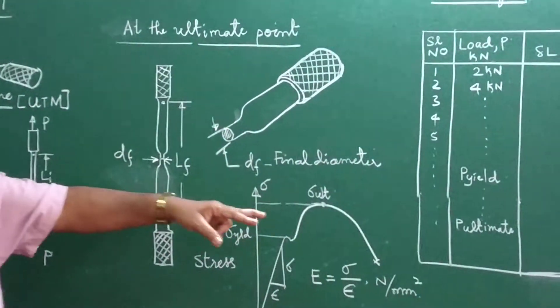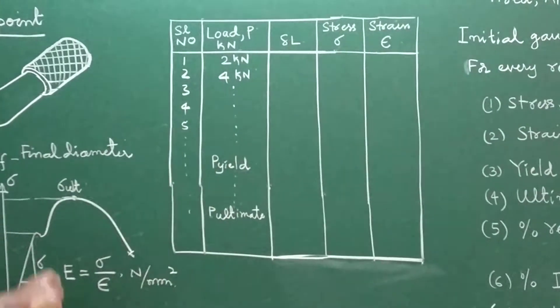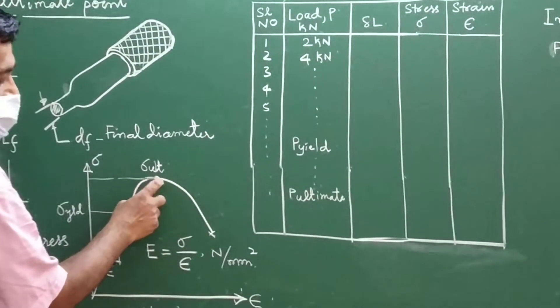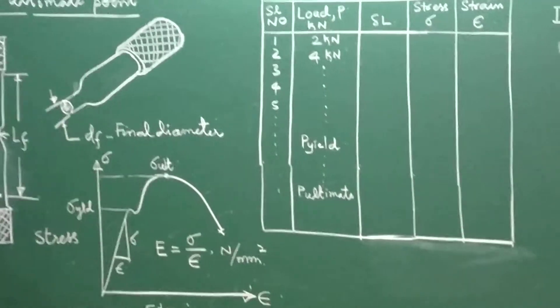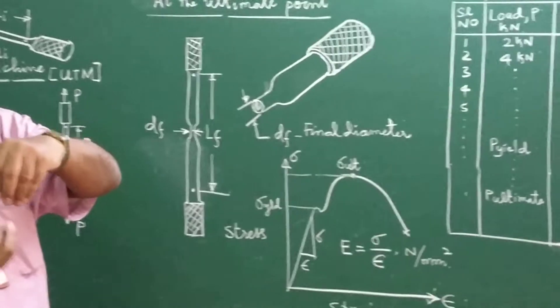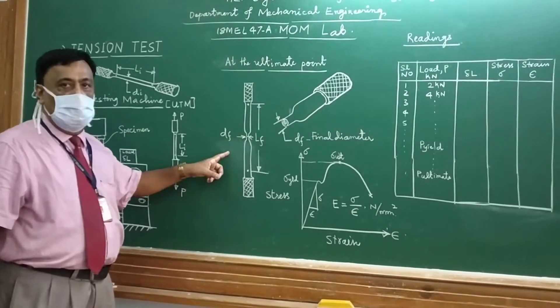As this ultimate load continues to increase, the reduction in diameter will continuously increase, and at one particular point it fractures. That is called the fracture point, and it has to be noted down.